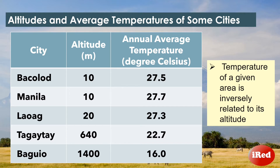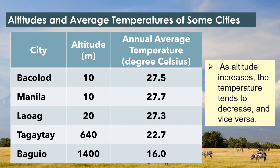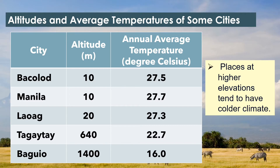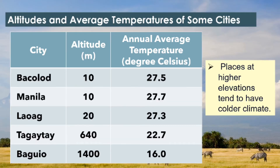As altitude increases, the temperature tends to decrease, and vice versa. Thus, places at higher elevations tend to have a colder climate. Manila and Bacolod have the lowest altitude and are thus the warmer cities, while Baguio is located at the highest altitude and therefore has the coldest climate.